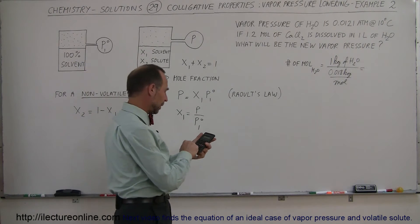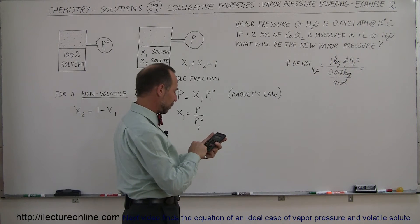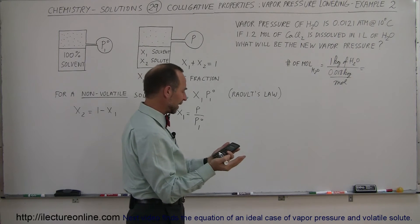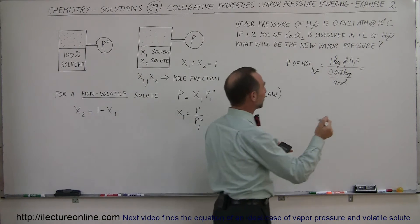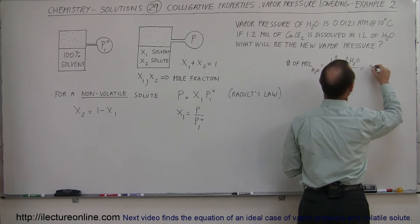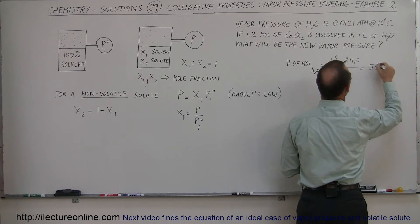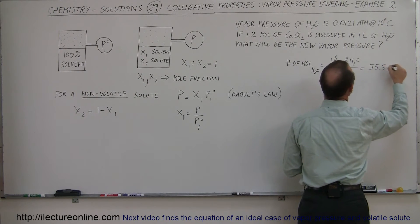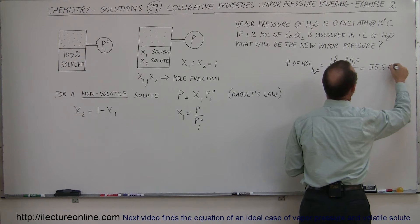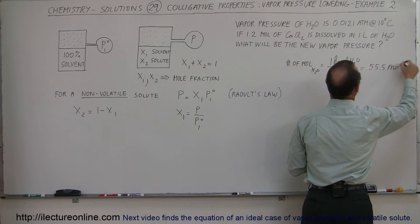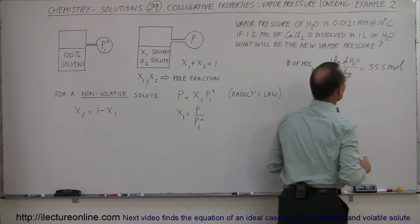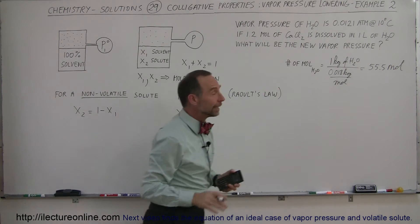We take 1 divided by 0.018, and we get 55.5 moles — 55.5 moles of water in 1 liter.